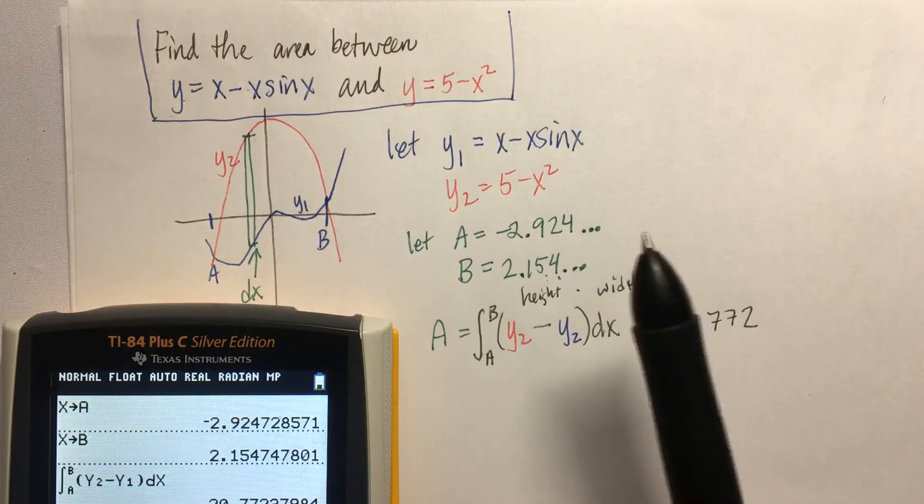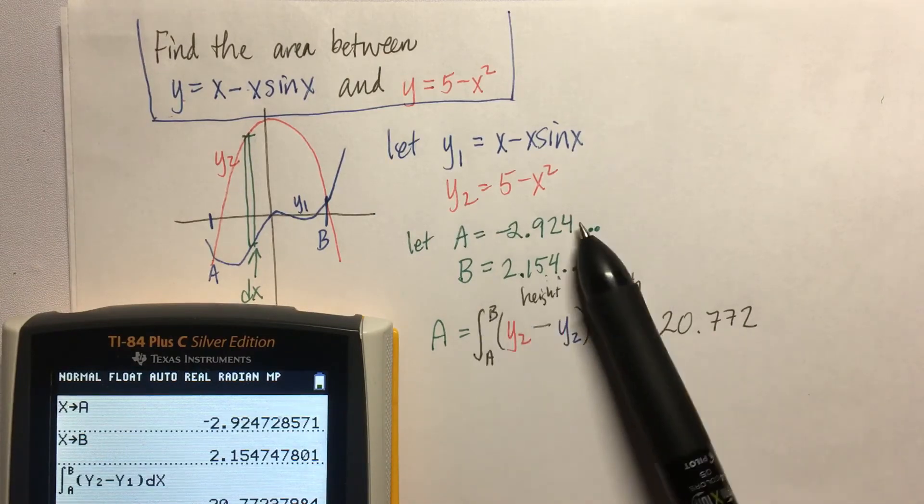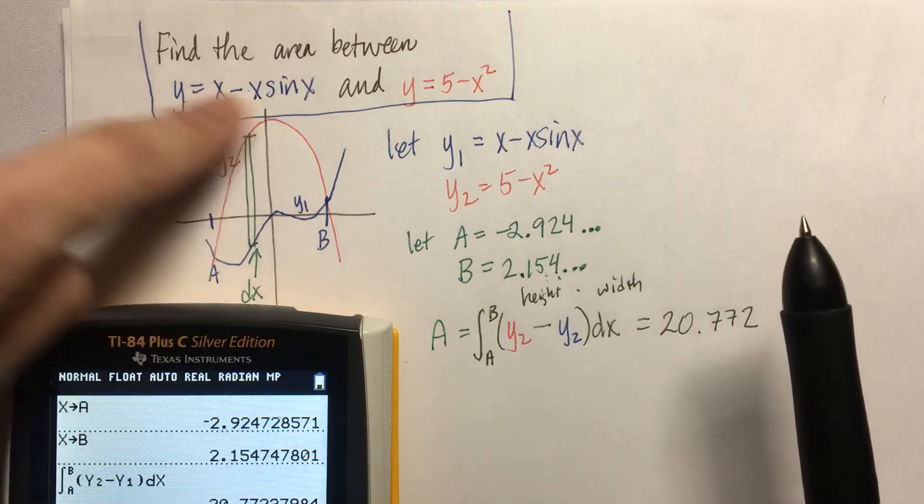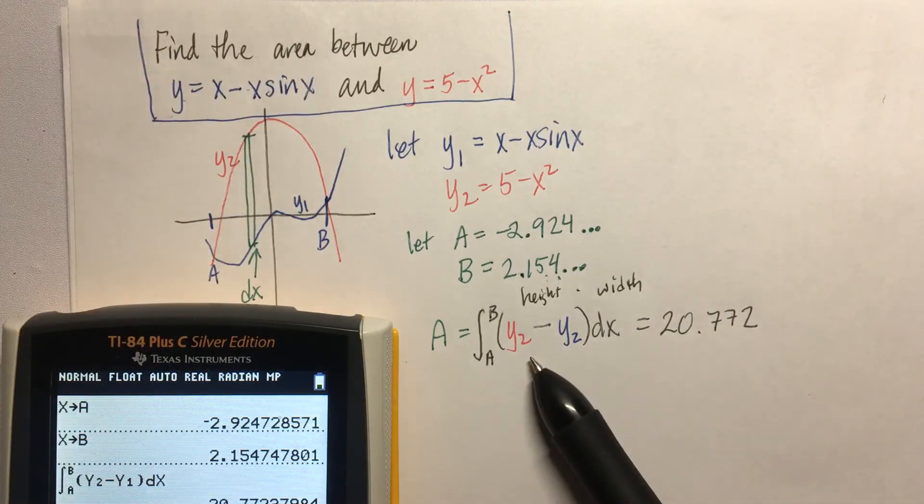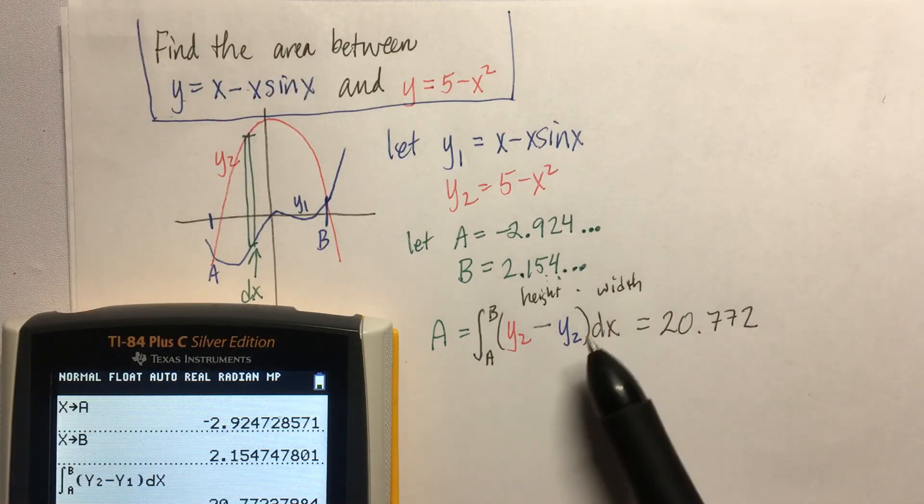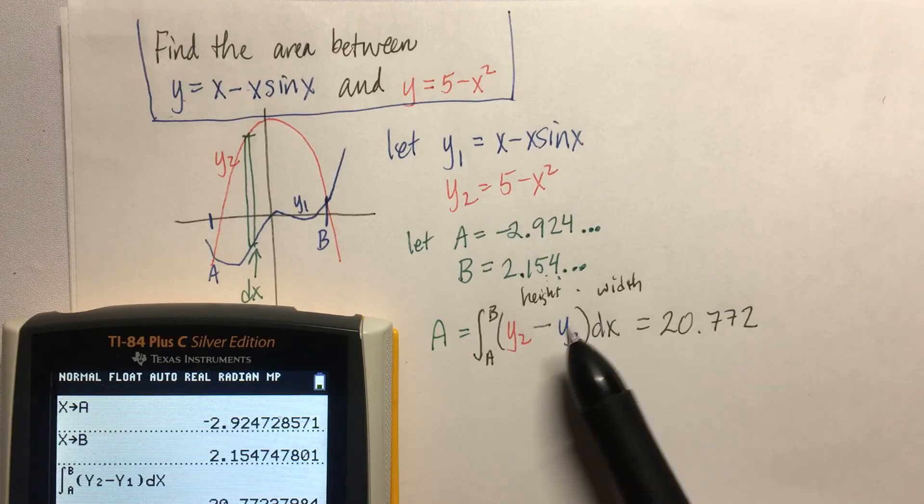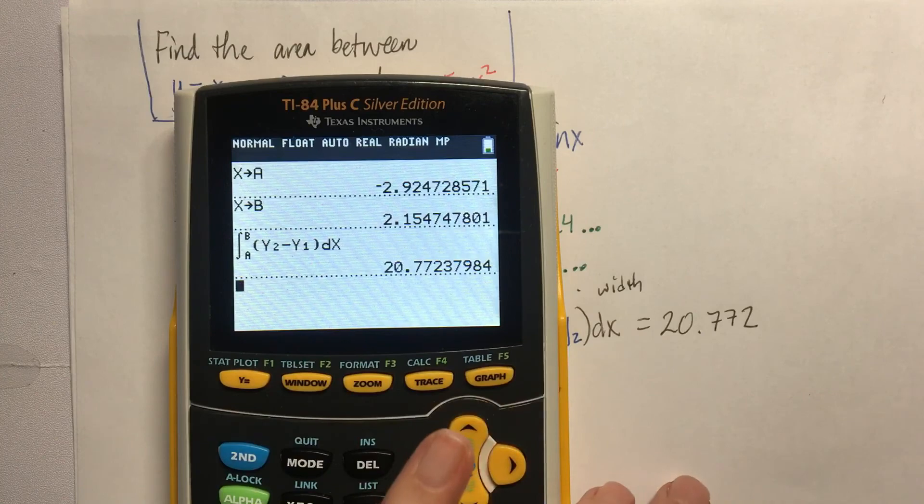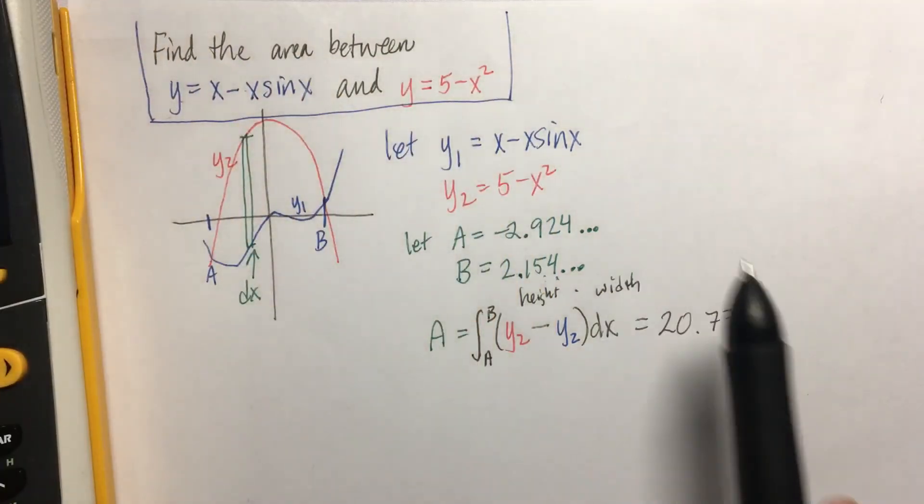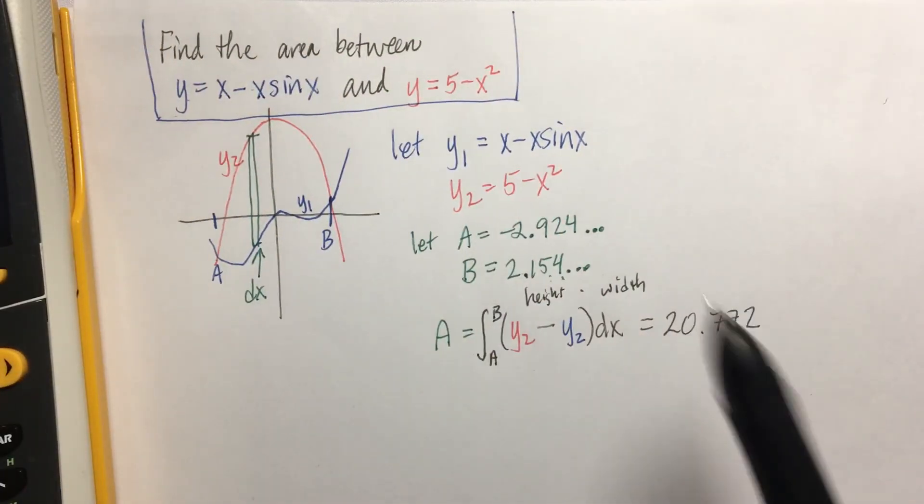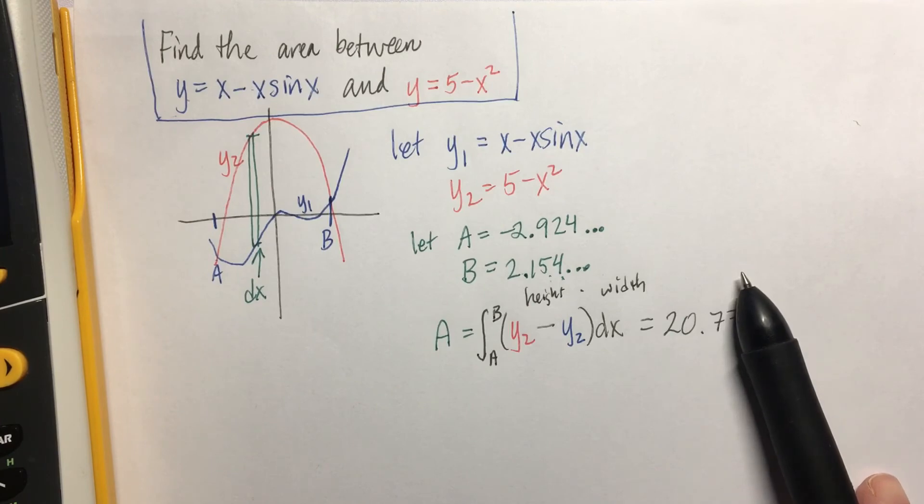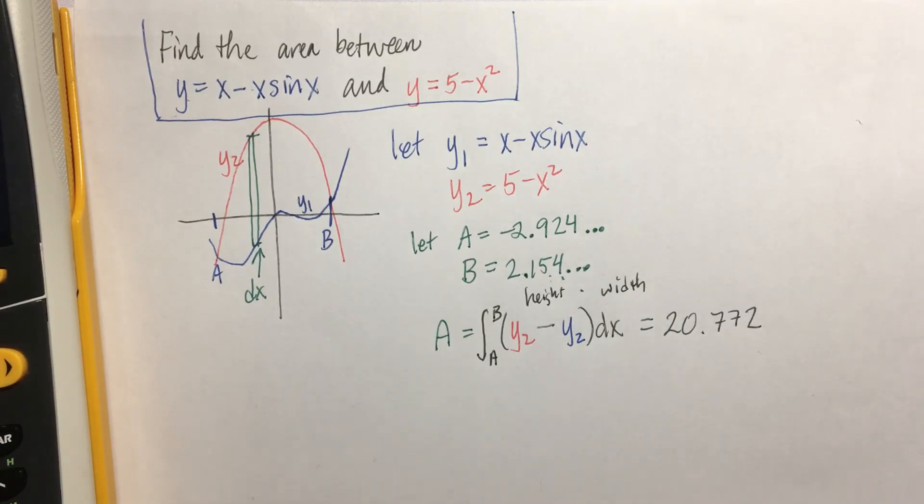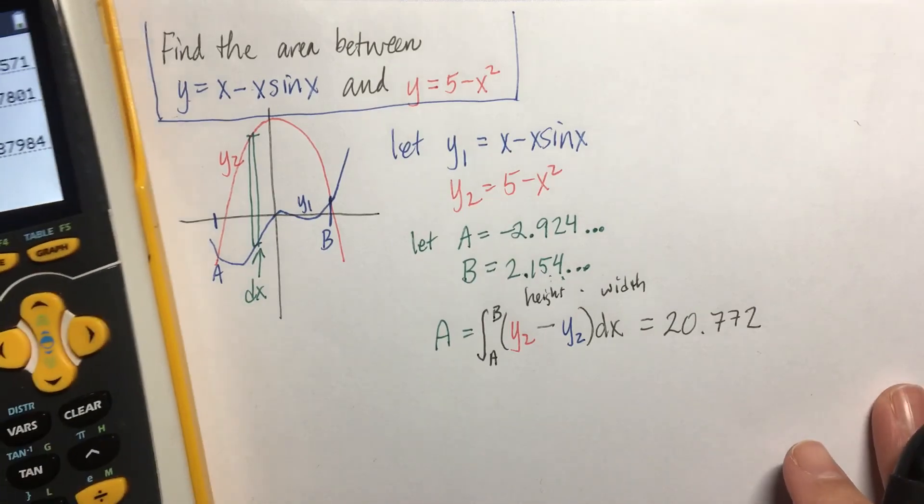In fact, even if we got these intersection points, because of this x sine x in the original problem, we couldn't integrate this by hand. You have no way of doing this problem correctly unless you use your calculator. It's the only way you can get it right. So you definitely want to be really good at using your calculator. It's going to become even more important when we hit our topic after the areas. So learn and love your calculator.